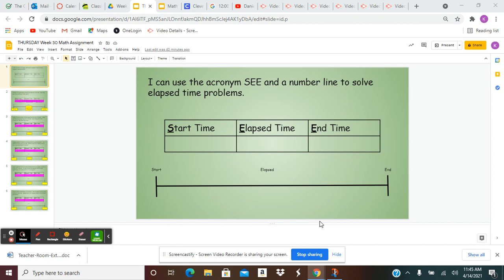In a chart, the S in the word SEE stands for the start time. The first E in SEE stands for elapsed time. This is the amount of time that has passed between when you have started something and when something is finished. The last E in SEE stands for end time.